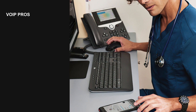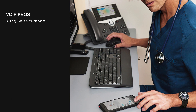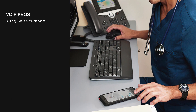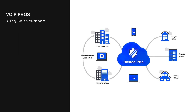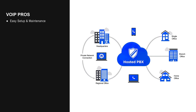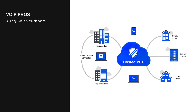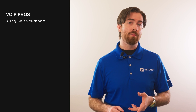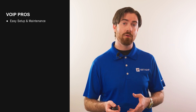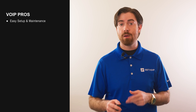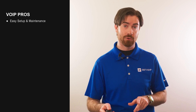Now let's cover the pros of VoIP. A VoIP phone system is easy to set up and maintain, especially if you opt for a hosted PBX VoIP service. With a cloud-hosted VoIP solution, you're up and running in minutes — just visit your provider's website, select a subscription, and you can begin making calls instantly. Since most modern VoIP providers offer softphone functionality, you can make calls directly from your phone or laptop without having to purchase any additional hardware.